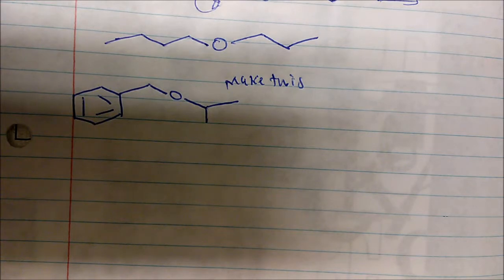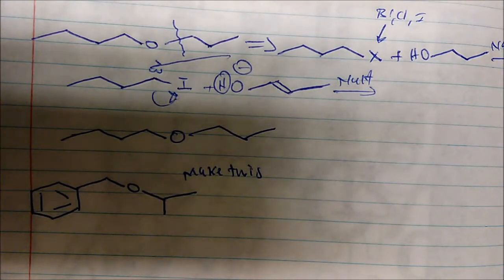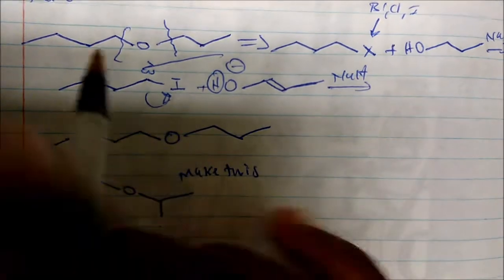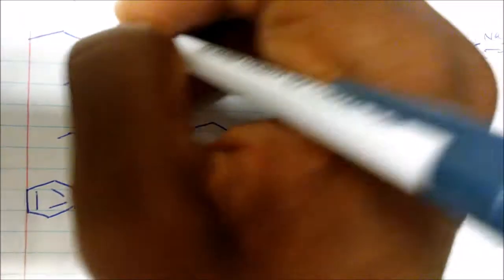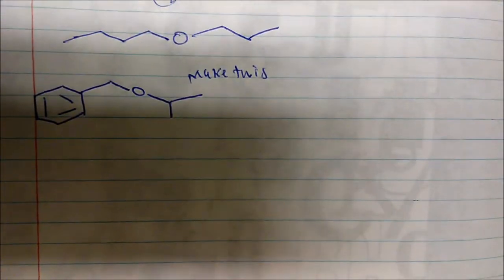Remember we said that Williamson ether synthesis favors SN2 chemistry. Unlike the first one, and maybe I should emphasize this, it doesn't matter which way you break the bond because our molecule is symmetrical. On either side we have both primary carbons, so either set up for good SN2 chemistry.